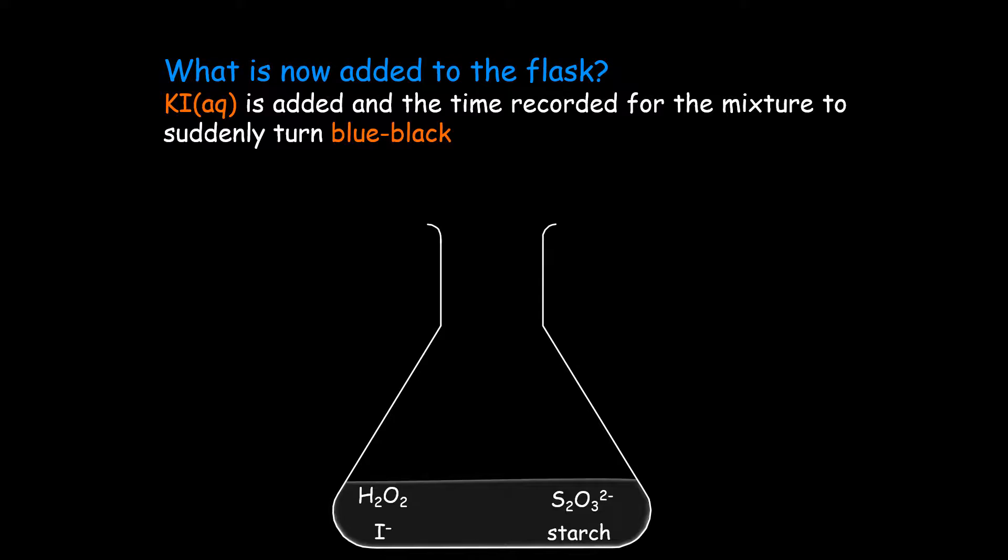We add potassium iodide which is the source of the iodide ions that we need. The time is recorded for the mixture to suddenly turn blue-black, and the blue-black comes with iodine reacting with the starch.